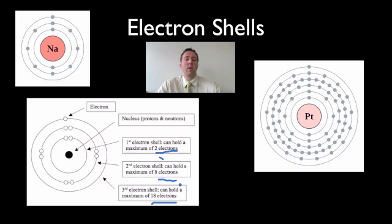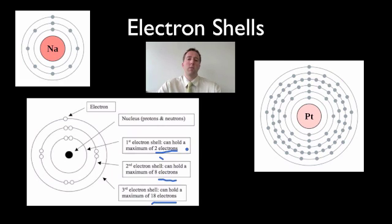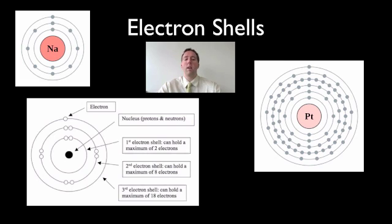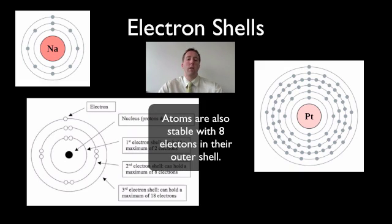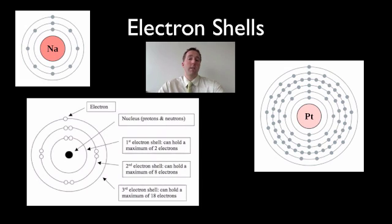An interesting thing about these shells is that when atoms have full outer shells, they are far more stable. An atom with only two electrons has a full first shell and is quite stable. Also, an atom with a full first shell of two electrons and a full second shell of eight — ten in total — will also be stable because it has its full outer shells. That's about electrons and the fact that they travel in these outer shells.